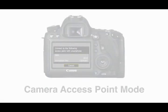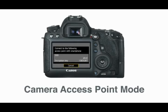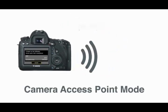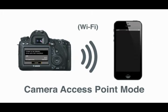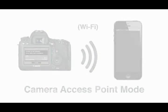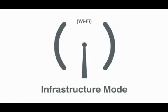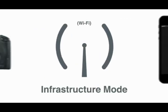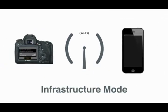There are two ways to connect your camera to your smartphone. With Camera Access Point mode, the camera creates a Wi-Fi network that your smartphone can connect to, particularly useful when shooting in the field. With Infrastructure mode, both the camera and smartphone share an existing Wi-Fi network.